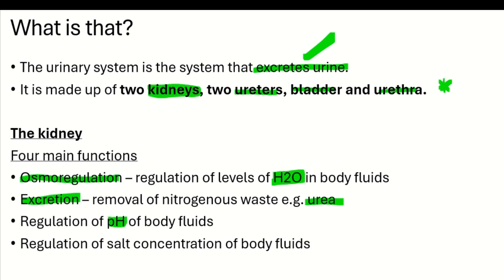The third function of the kidney is to regulate the pH of the body fluids. pH describes the acidity of something. If your body fluids are too acidic they can harm you, so the kidneys regulate those pH levels. The fourth function is to regulate the salt concentration of the body fluids — that is, the amount of salt in your body. If there is too much salt the kidney reduces it; if there is too little, the kidney increases it.